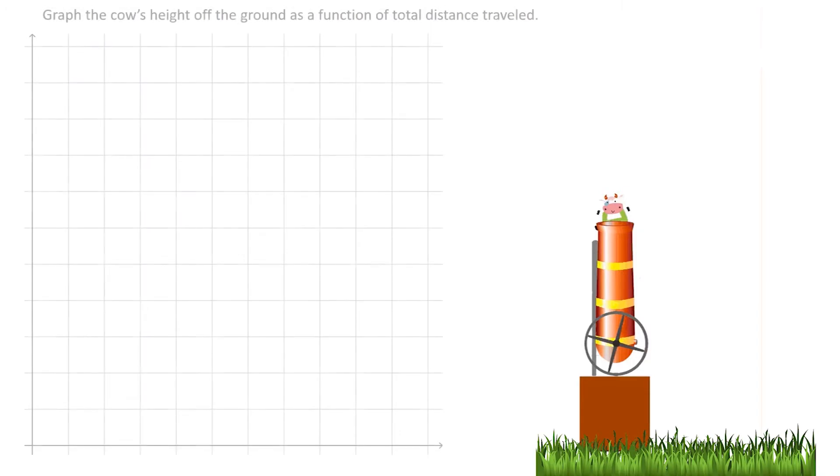In this video, you will see Julian and Alyssa watching a video of a cow being shot out of a cannon and trying to graph the cow's height off the ground as a function of its total distance traveled.